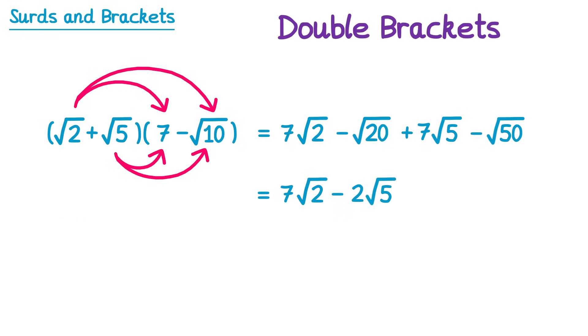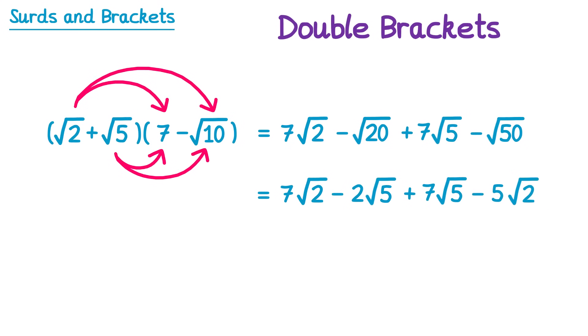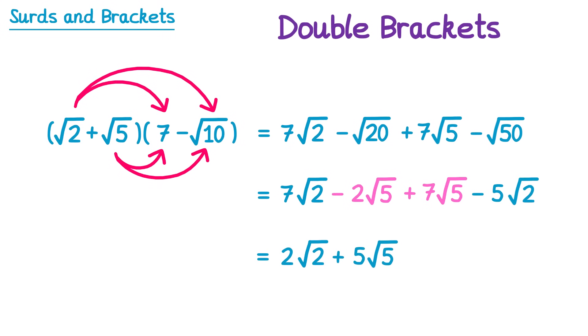7 root 5 can't be simplified, so we write 7 root 5. But square root 50 can be simplified — we rewrite square root 50 as square root 25 times square root 2, and square root 25 is 5, so it's 5 root 2. Now that we've simplified those surds, we can see there is further simplification: 7 root 2 subtract 5 root 2 gives 2 root 2. And negative 2 root 5 plus 7 root 5 gives 5 root 5. So the final answer is 2 root 2 plus 5 root 5.